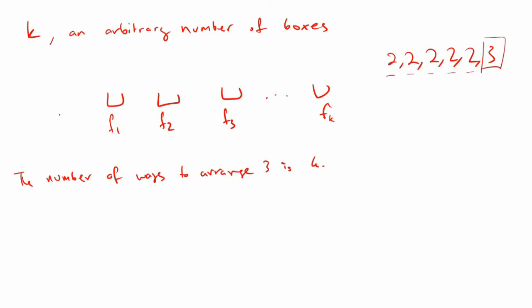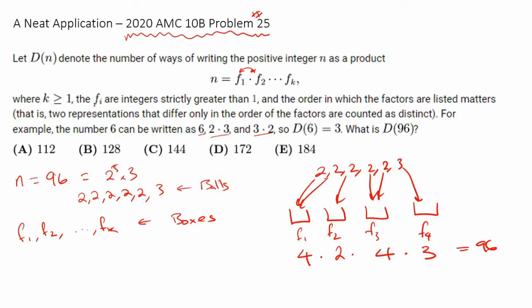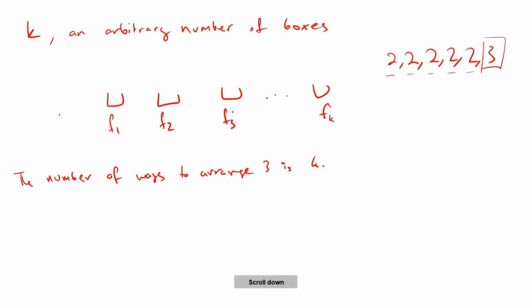Now you might think we can apply stars and bars to the rest of the boxes. But, there's a slight problem from the problem. F_i are integers strictly greater than 1. And that tells us none of these boxes can be empty. That's true because if any of these boxes are empty, that means that F_i is equal to 1. Because it doesn't have any factors, so it must, by default, be 1. And we just said that F_i is strictly greater than 1. So, we need something in each one of these boxes. And remember, we already have a 3 put in one of these boxes. So, without loss of generality, let's just say that 3 is put in this one. So, the remaining k minus 1 boxes must have at least something in them. They can't be empty.